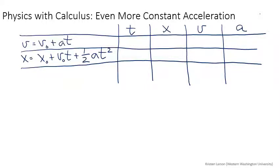Let's look at the first equation. What does it have? It has velocity and acceleration and time. What does the second equation have? It has position and time, it doesn't have velocity, but it does have acceleration.